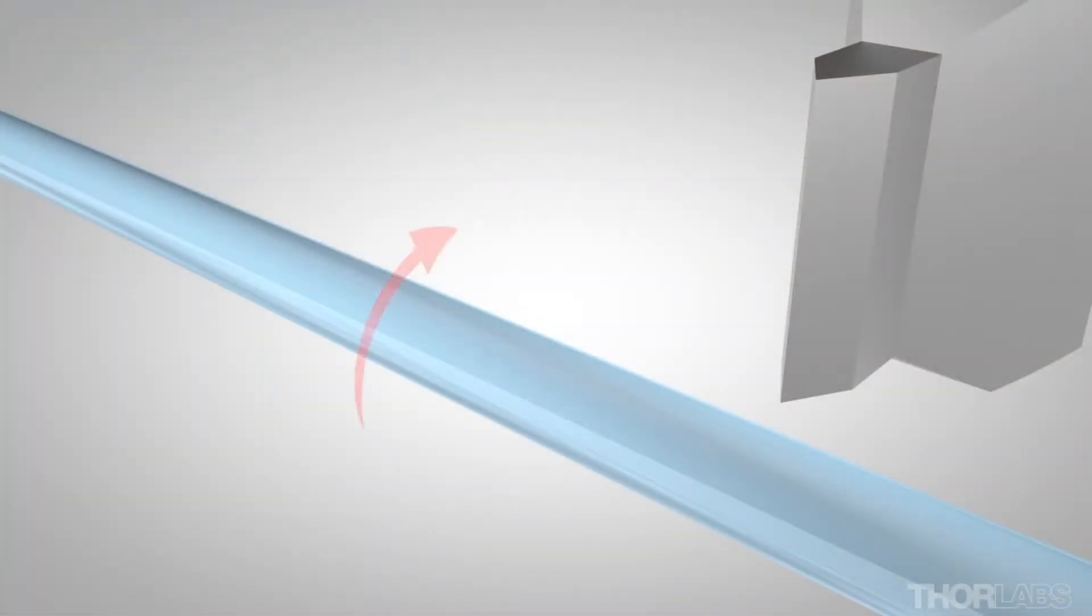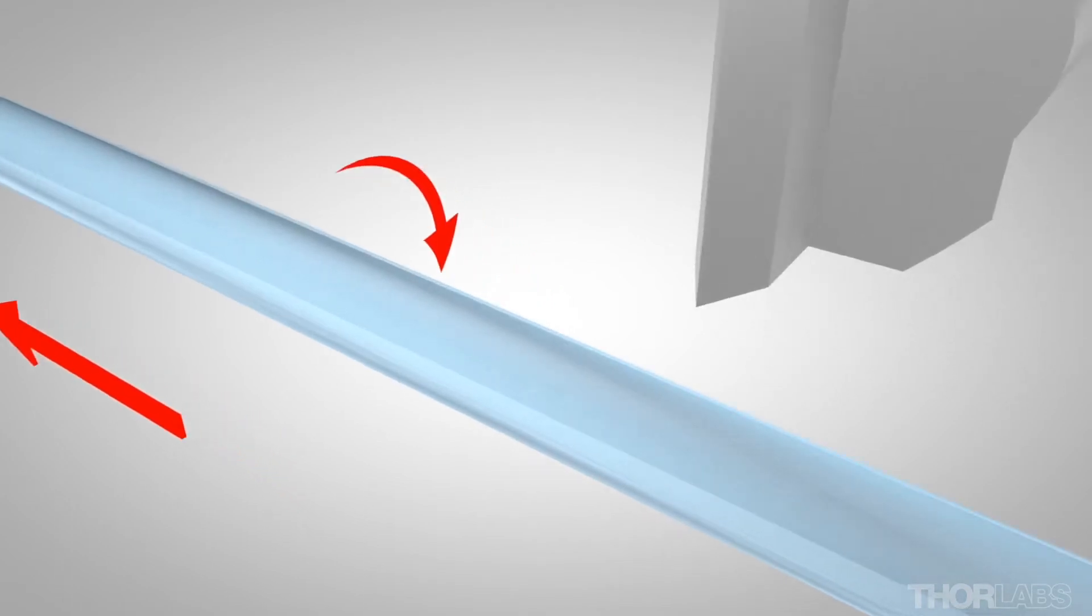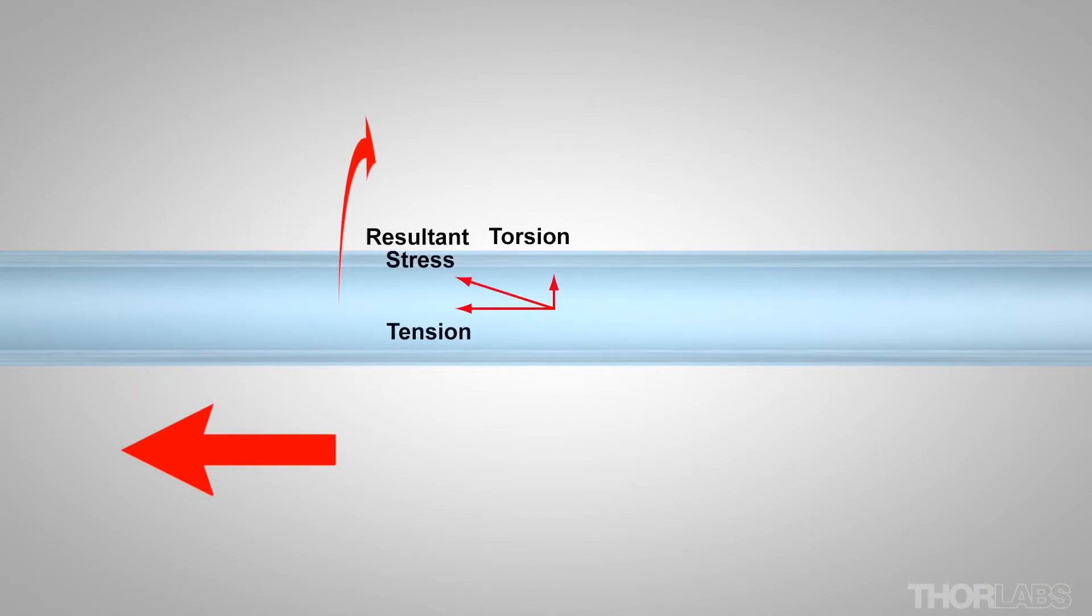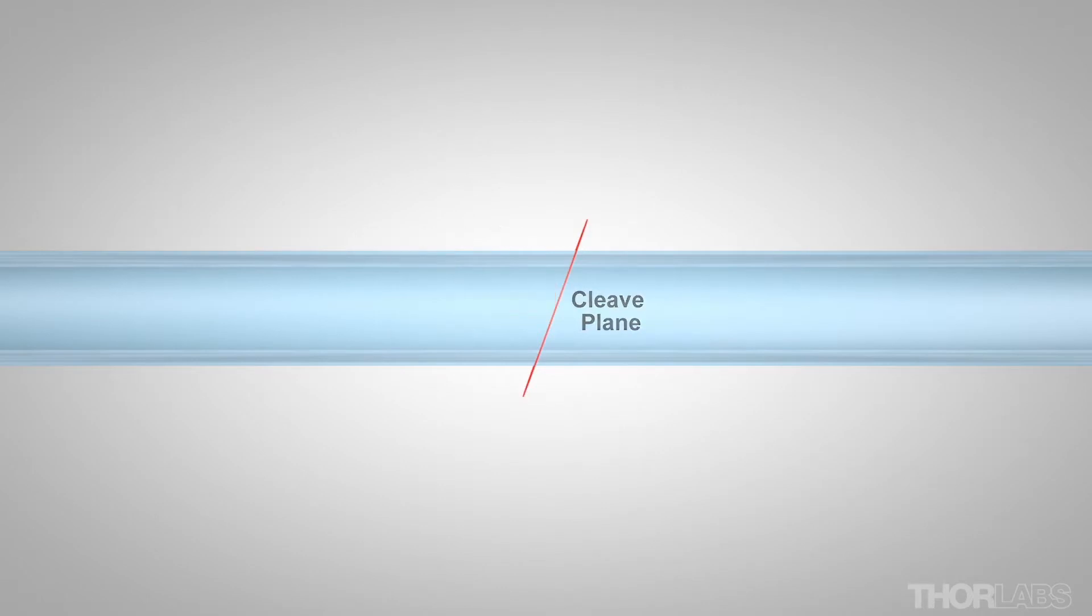To achieve an angled cleave, the fiber is placed under both a known tensile and torsional stress. Now the resultant stress is at an angle to the fiber axis and results in an angled cleave plane across the fiber.